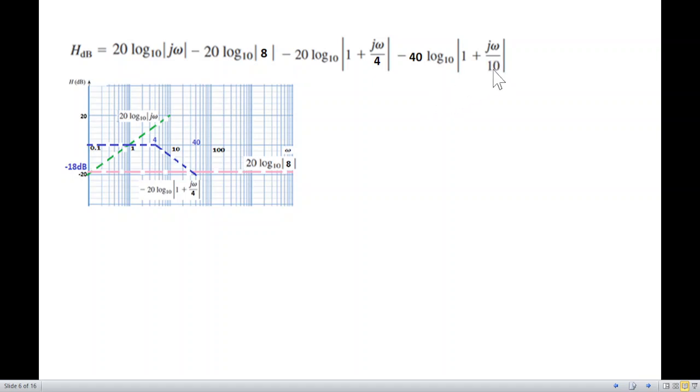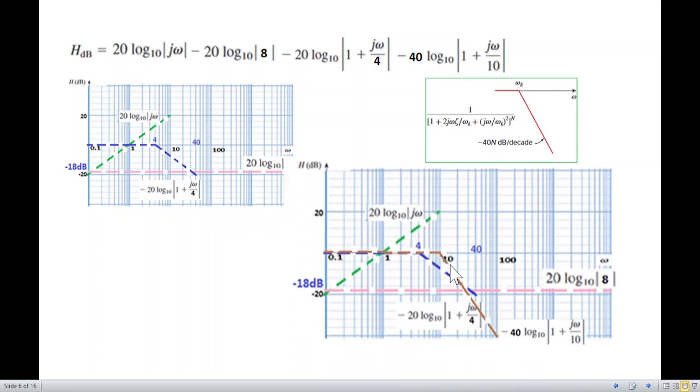The breaking point, the corner frequency, is 10. At the corner frequency it's 0 dB, then it goes down 40 dB per decade because of the power 2. So this is minus 40 log 1 plus j omega over 10.